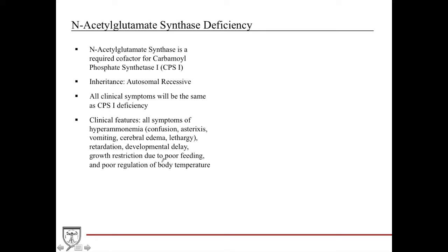The next one is N-acetylglutamate synthetase. As you remember, this is an allosteric activator that's important for carbamoyl phosphate synthetase. This is AR, autosomal recessive. Yes, it's a pain, but you do have to understand what the genetic inheritance patterns are. All these clinical manifestations are very similar to CPS1 deficiencies because this is heavily tied in with CPS1.